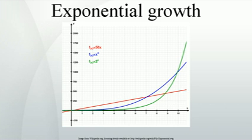Human population, if the number of births and deaths per person per year were to remain at current levels (but also see logistic growth): according to the United States Census Bureau, over the last 100 years the population of the United States of America is exponentially increasing at an average rate of 1.5% a year. This means that the doubling time of the American population, depending on the yearly growth in population, is approximately 50 years.